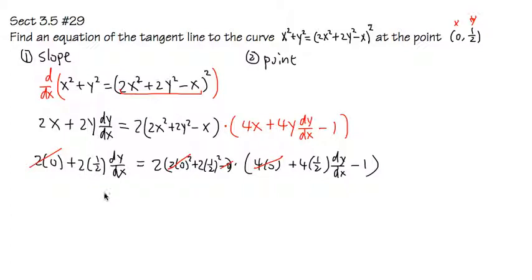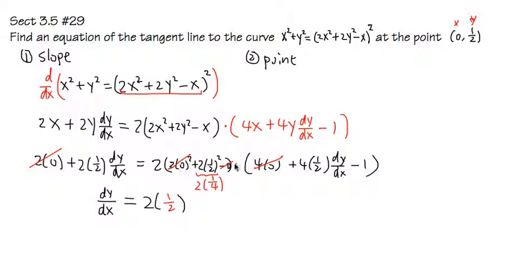2 times 1/2 is 1, so you have 1 times dy/dx on the left. And dy/dx is going to be the slope of the curve at this point. On the right, we have 2 times (1/2) — and 1/2 squared is 1/4, so 2 times 1/4 is 1/2. The result inside the parentheses is just 1/2. Then 4 times 1/2 is 2, so we have 2 dy/dx minus 1. The 2 times 1/2 on the outside cancels to 1, so the right-hand side is 1 times (2 dy/dx minus 1).